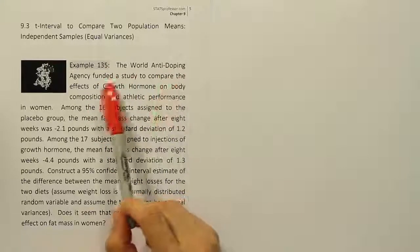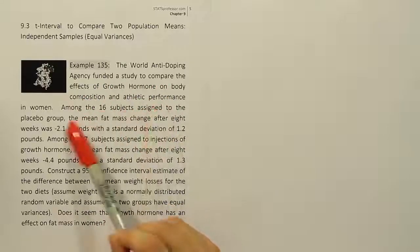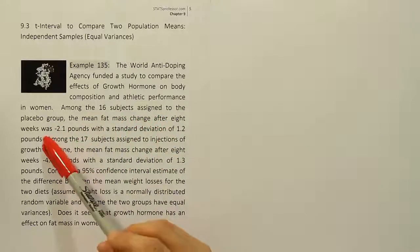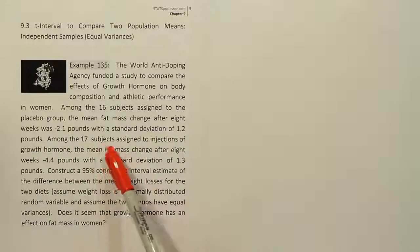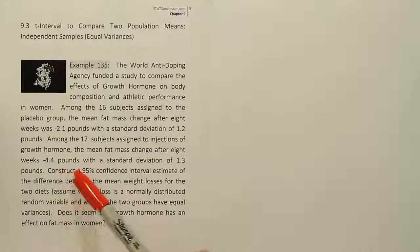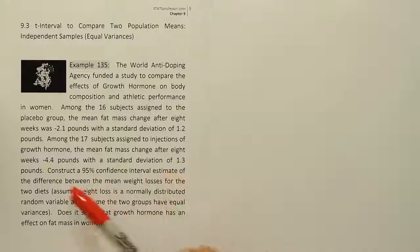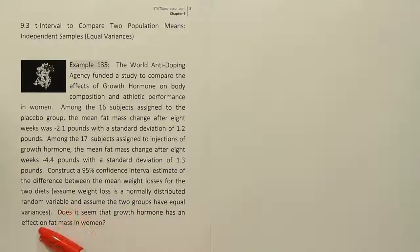Example 135. The World Anti-Doping Agency funded a study to compare the effects of growth hormone on body composition and athletic performance in women. Among the 16 subjects assigned to the placebo group, the mean fat mass change after 8 weeks was negative 2.1 pounds with a standard deviation of 1.2 pounds. Among the 17 subjects assigned to injections of growth hormone, the mean fat mass change after 8 weeks was negative 4.4 pounds with a standard deviation of 1.3 pounds. Construct a 95% confidence interval estimate of the difference between the mean weight losses for the two diets. Assume weight loss is a normally distributed random variable and assume the two groups have equal variances. Does it seem that growth hormone has an effect on fat mass in women?